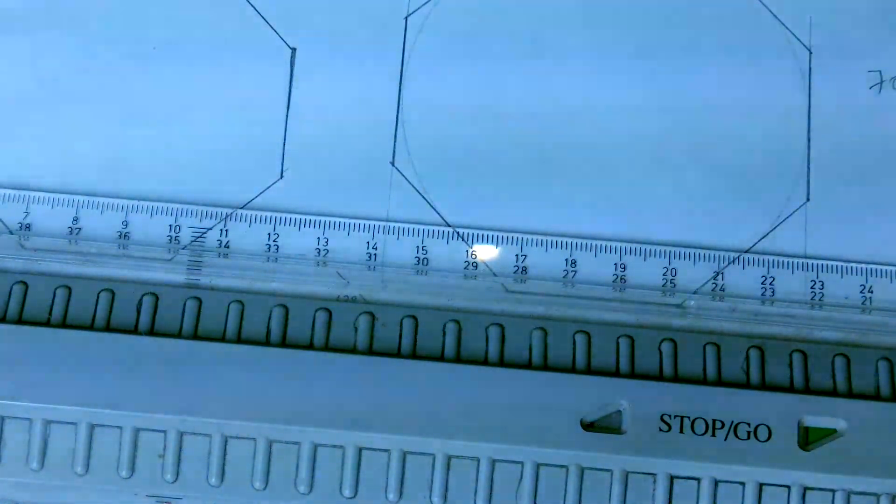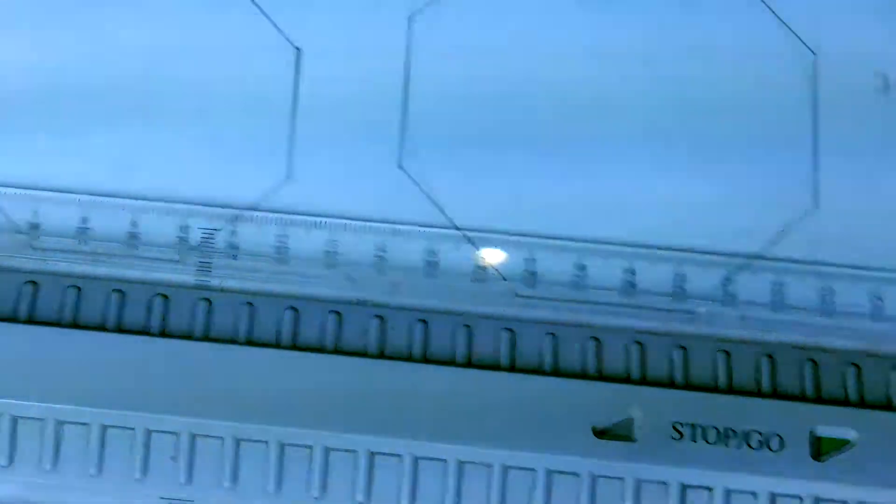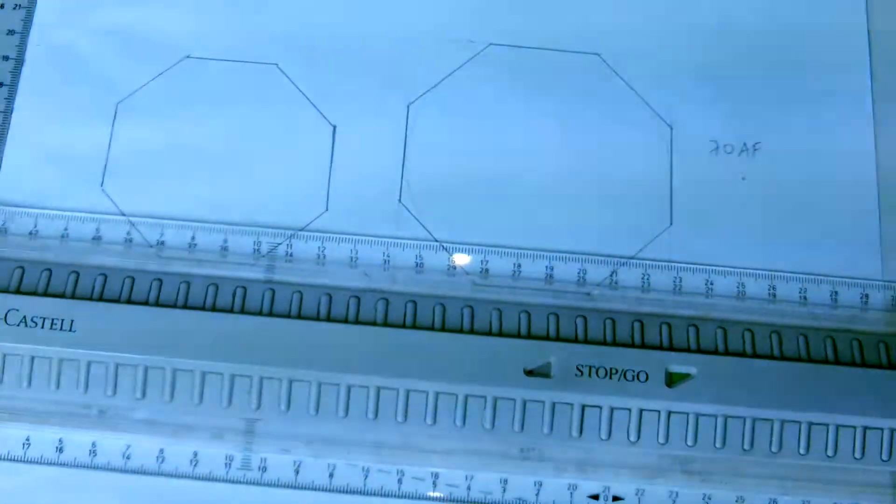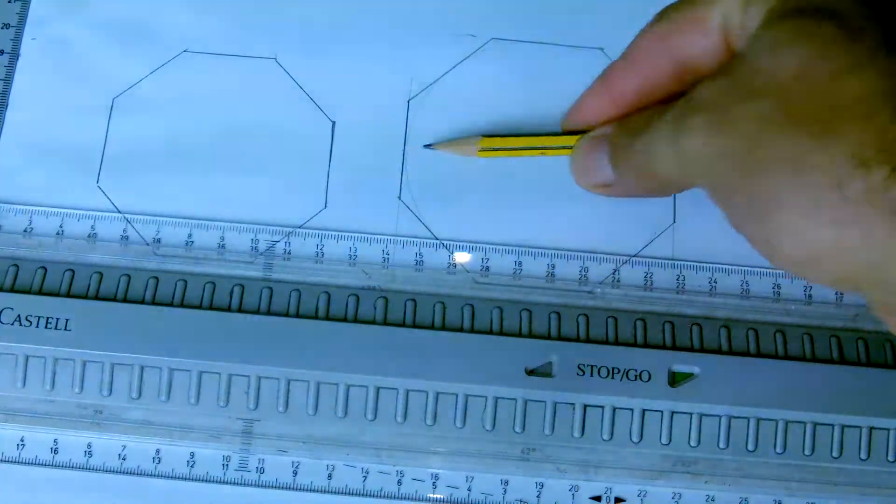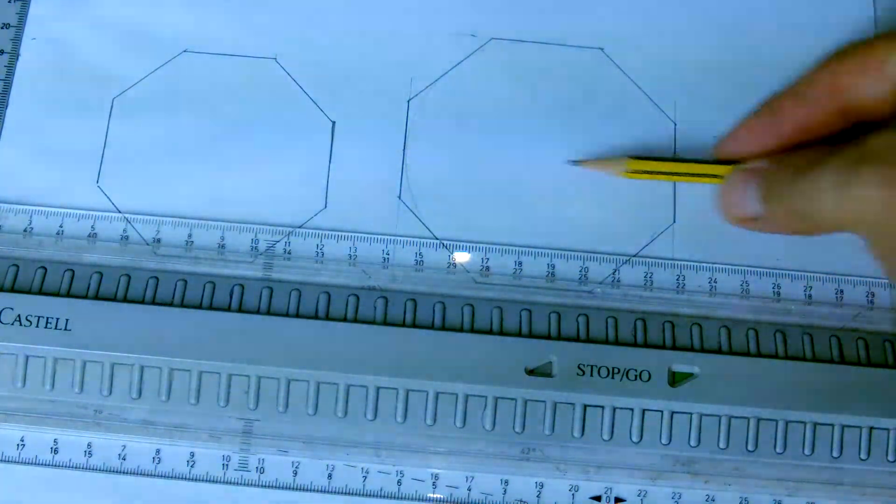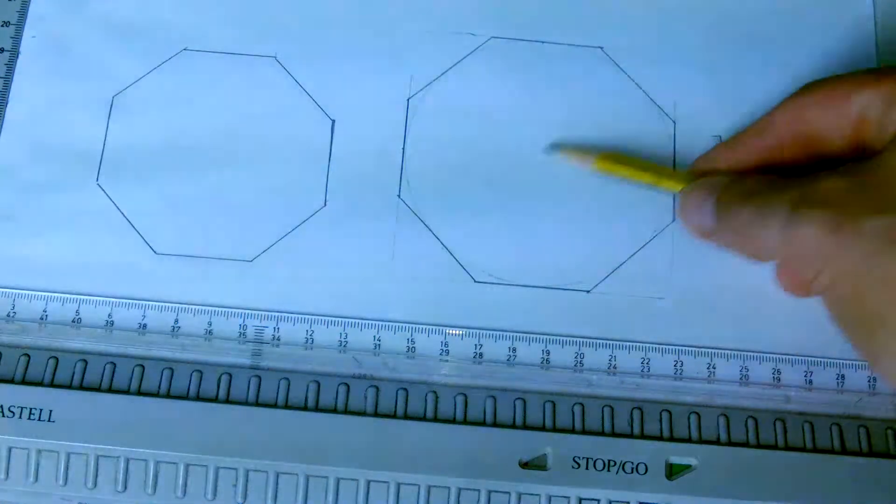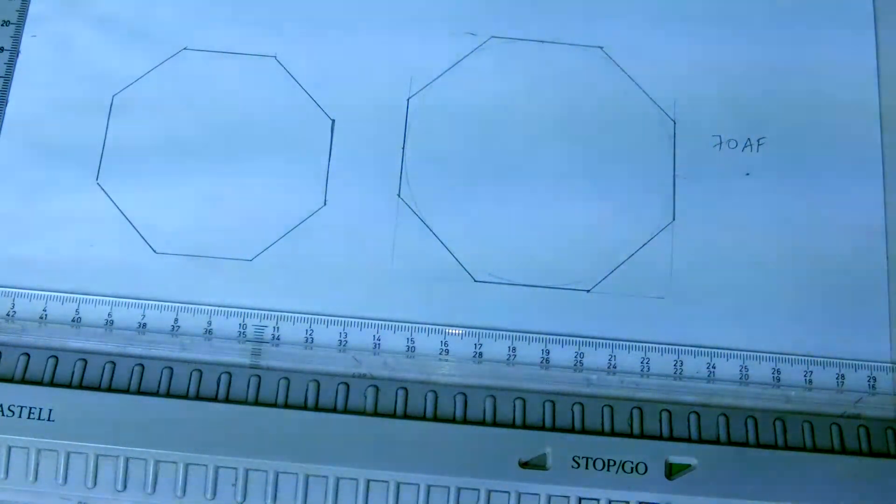That would mean that if it's a 70 AF octagon, it's got 70 from this flat, from this face to this face, or from this face to this face, or from this face to this face, and so on.